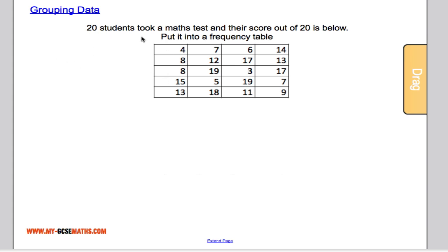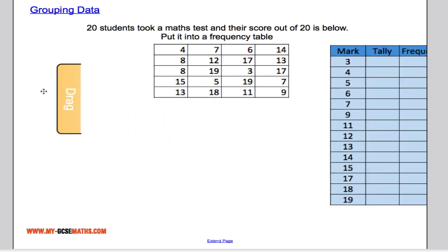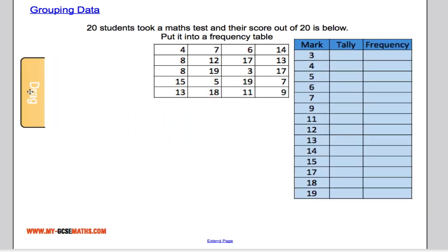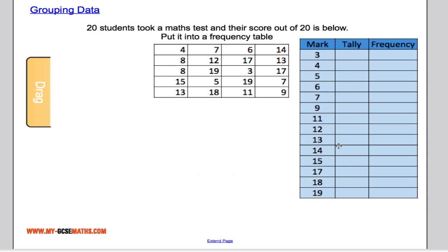Suppose I have data for 20 students who took a maths test and their score out of 20 is listed below and I'm asked to put it into a frequency table. Now we could use a tally chart except you'll see it's really not going to be all that efficient. If you have a look here we end up with something like this and I'd have to fill all of this information in. It just seems rather convoluted and complicated.